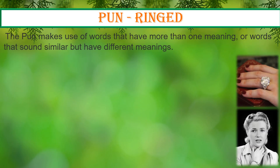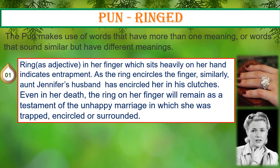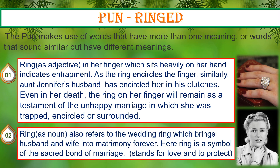In the poem, 'ring' has two meanings — it is an example of pun. A pun makes use of words that have more than one meaning or words that sound similar but have different meanings. 'Ringed' indicates entrapment, as the ring encircles the finger; similarly, Aunt Jennifer's husband has encircled her in his clutches. Even in her death, the ring on her finger will remain as a testament to the unhappy marriage in which she was trapped. Ring also refers to the wedding ring, which brings husband and wife into matrimony — it stands for love and protection.